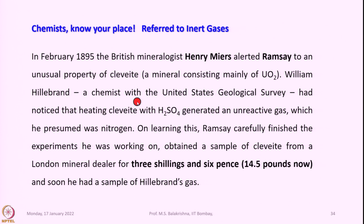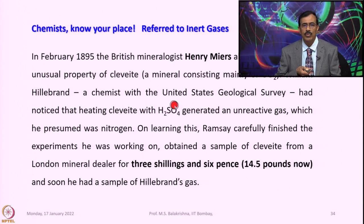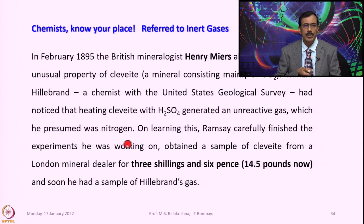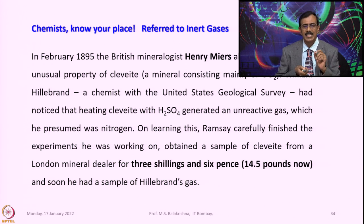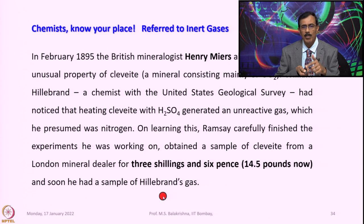William Hillebrand, a chemist with the United States Geological Survey, had noticed that heating cleavite with sulfuric acid generated an unreactive gas which he presumed was nitrogen. On learning this, Ramsey carefully finished the experiments he was working on, obtained a sample of cleavite from a London mineral dealer for 3 shillings and 6 pence — that means 14.5 pounds now — and soon he had a sample of the Hillebrand gas.